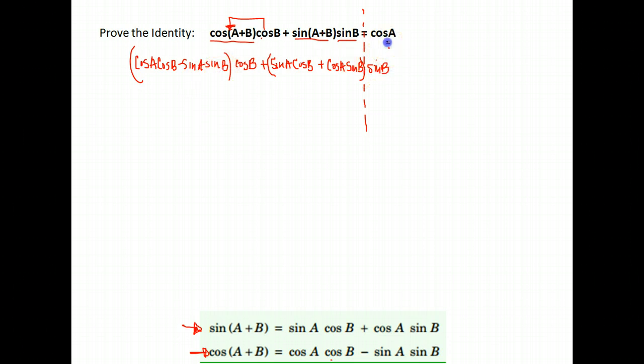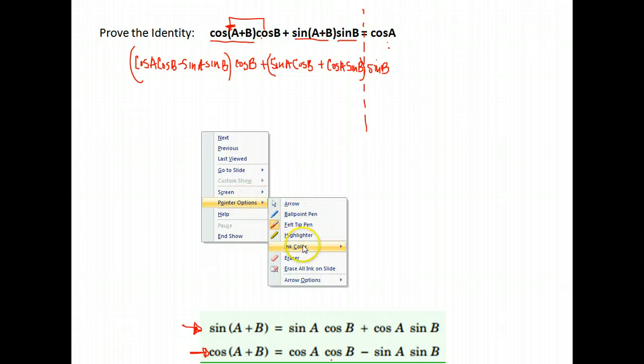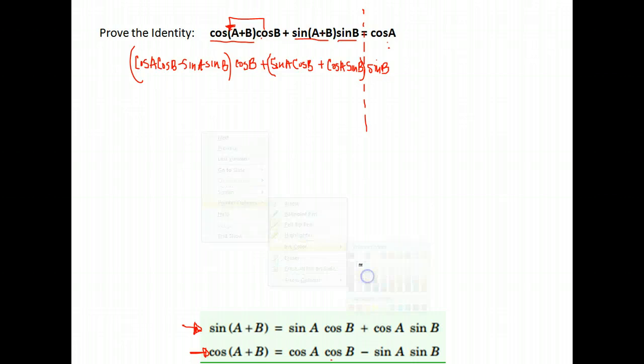We need to continue simplifying. We definitely don't have just cosine A here. So what we now need to do is, in simplifying, we typically remove parentheses. To remove the parentheses, we would distribute. Here, cosine B times these. Notice that gives me cosine B times cosine B, which is cosine squared B, minus sine A sine B cosine B.